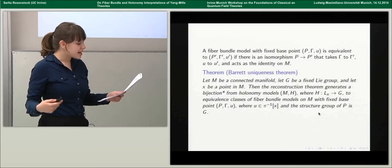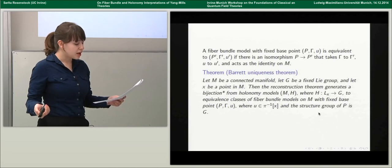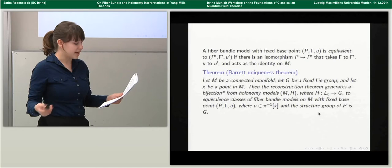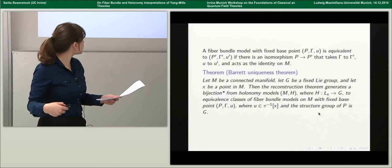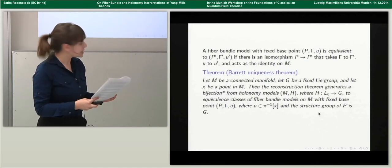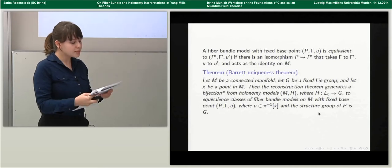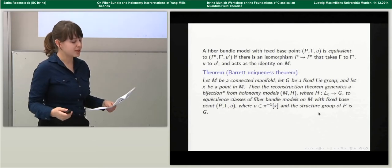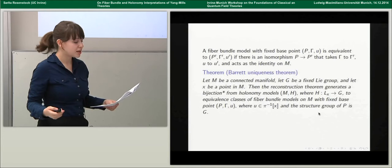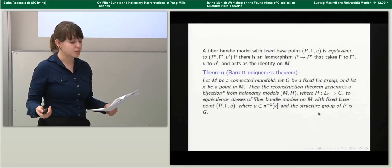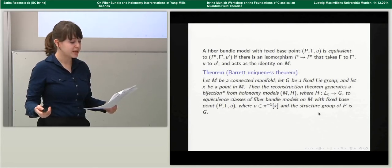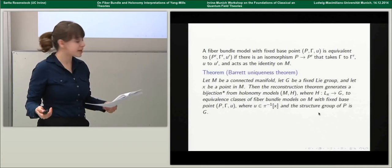As stated, however, Barrett's theorem is technically false. One also needs to consider as equivalent holonomy models that are related by inner automorphisms of their ranges. There are other ways in which holonomy models can be equivalent that aren't considered. Moreover, we'd like to consider fiber bundle models without reference to a particular base point, since base points don't play a role unless we're looking at holonomies.